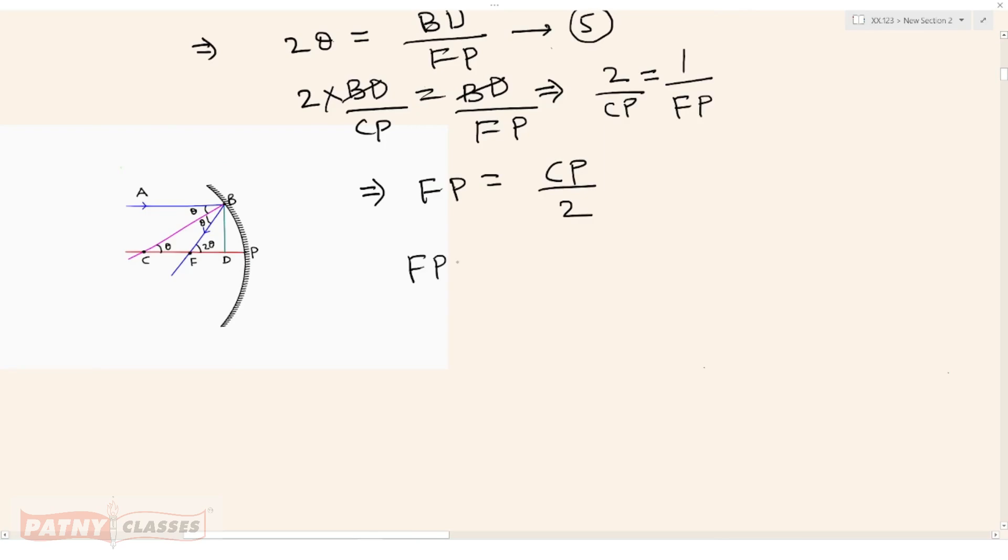But from this figure, FP equals F, that is focal length, and CP equals R, that is radius of curvature. This implies F equals R upon 2. Hence the relationship between the focal length and radius of curvature is proved.